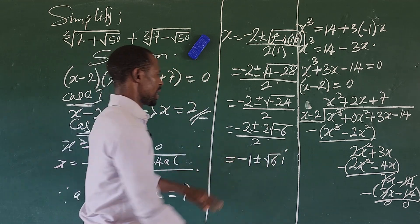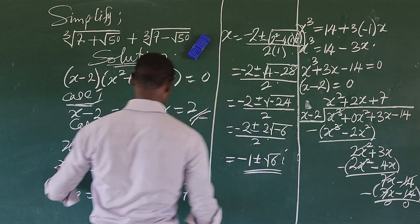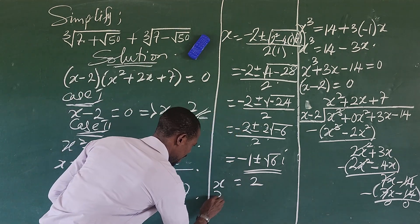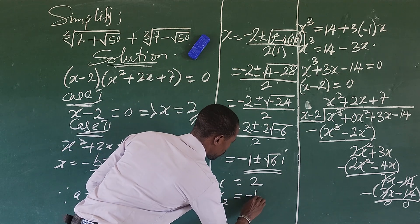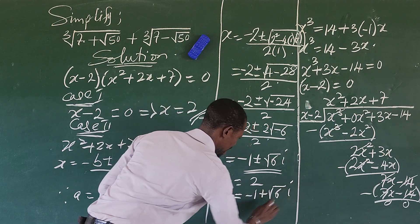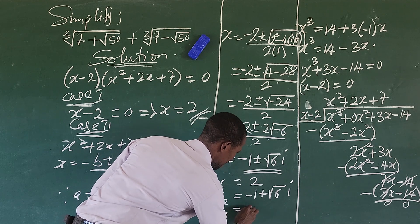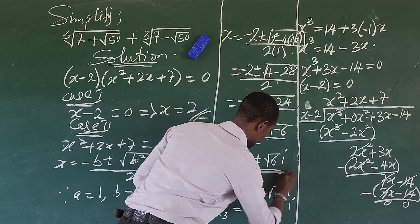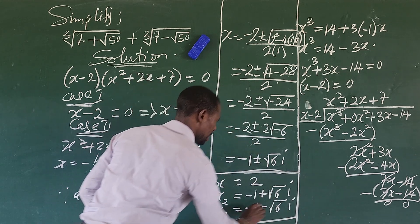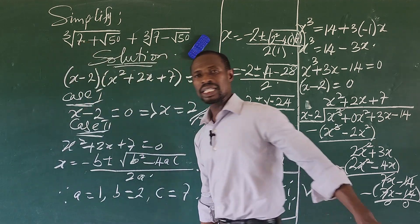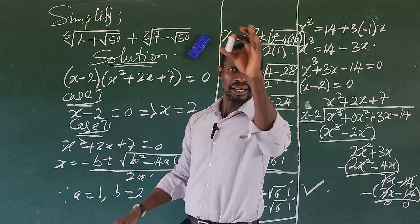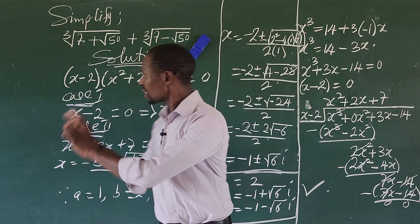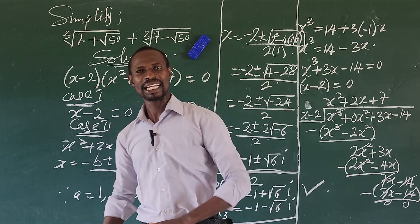So the three answers are: x₁ = 2, x₂ = −1 + i√6, and x₃ = −1 − i√6. These are the three roots obtained when the expression is simplified. This brings us to the end of this challenge. If you learned from this video tutorial, give it a thumbs up, and drop any questions in the comment section. See you in my next video.